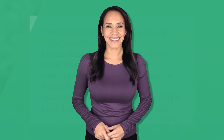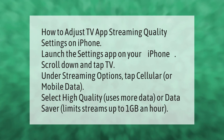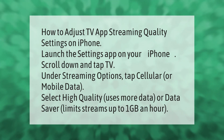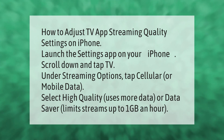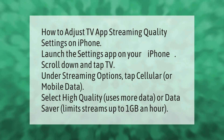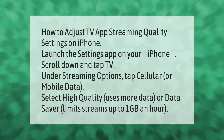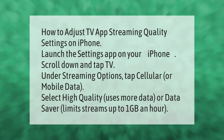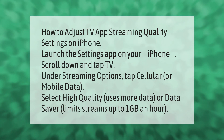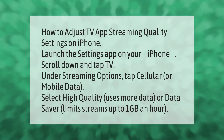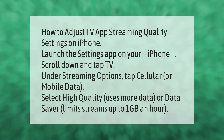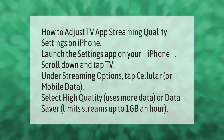To adjust TV app streaming quality settings on iPhone: launch the Settings app on your iPhone, scroll down and tap TV. Under Streaming Options, tap Cellular or Mobile Data, then select High Quality (uses more data) or Data Saver (limits streams up to 1 gigabyte an hour).